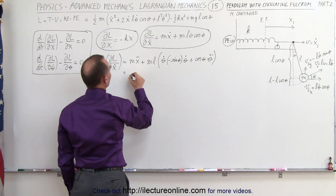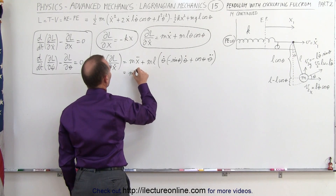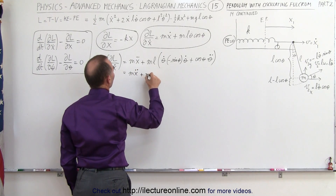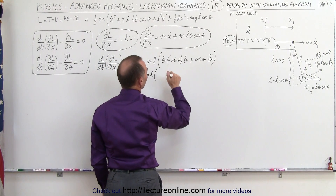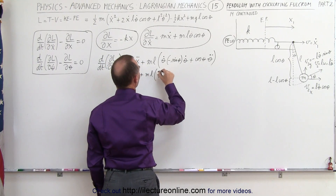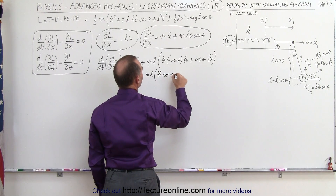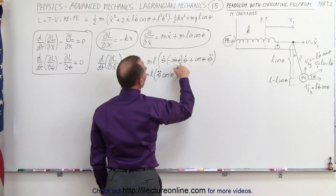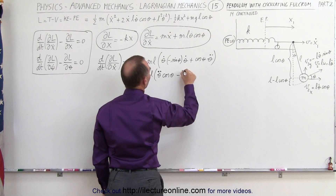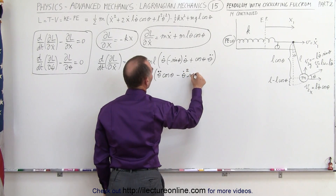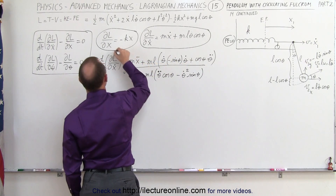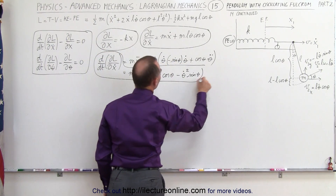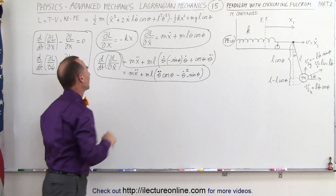Simplifying this, we get: m x-double-dot, plus m times l times — moving terms to the front — theta-double-dot times cosine of theta, minus theta-dot-squared times sine of theta. This becomes the time derivative of the Lagrangian with respect to x-dot.